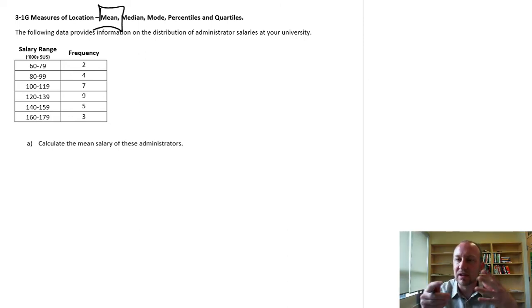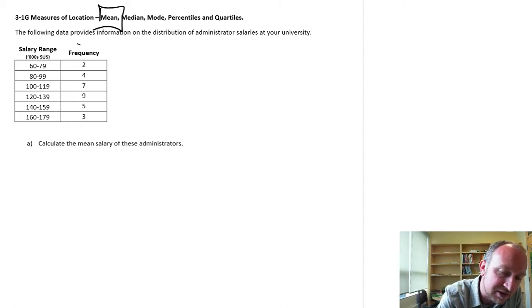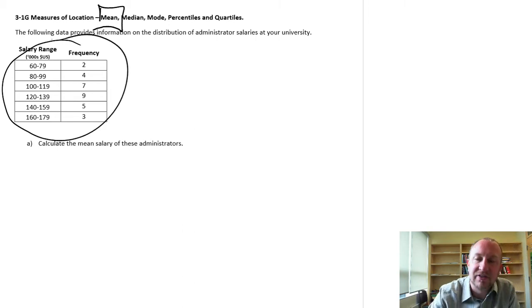Now a mean, of course, we know this is calculated by adding up all of the observations in our data set and dividing it by the number of observations that we have. However, in this particular exercise we don't have the data set. Instead of having the data set itself, what we do have is a frequency distribution of the data set.